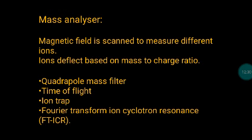Coming to the mass analyzer: the magnetic field is scanned to measure different ions. Ions are deflected based on mass-to-charge ratio — the lighter the mass, the more they get deflected. Positive ions are deflected based on mass-to-charge ratio, and the value outcome is called the mass-to-charge ratio. The different types of analyzers are: quadrupole mass filter, time-of-flight (TOF), ion trap, and Fourier transform ion cyclotron resonance (FTICR).